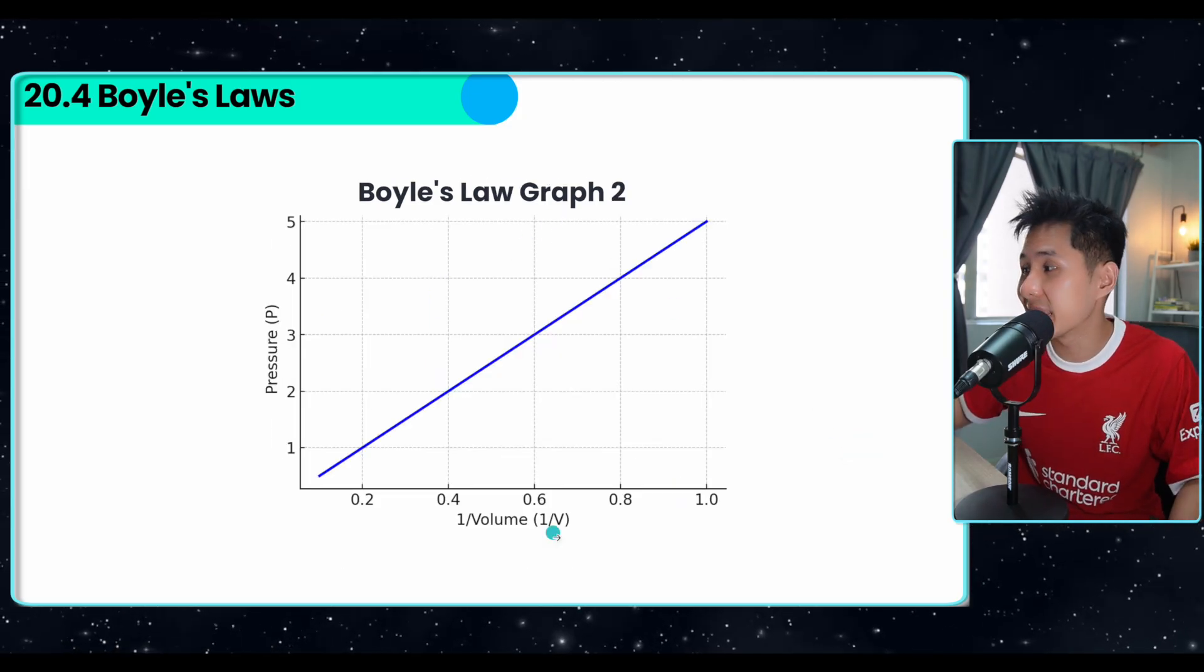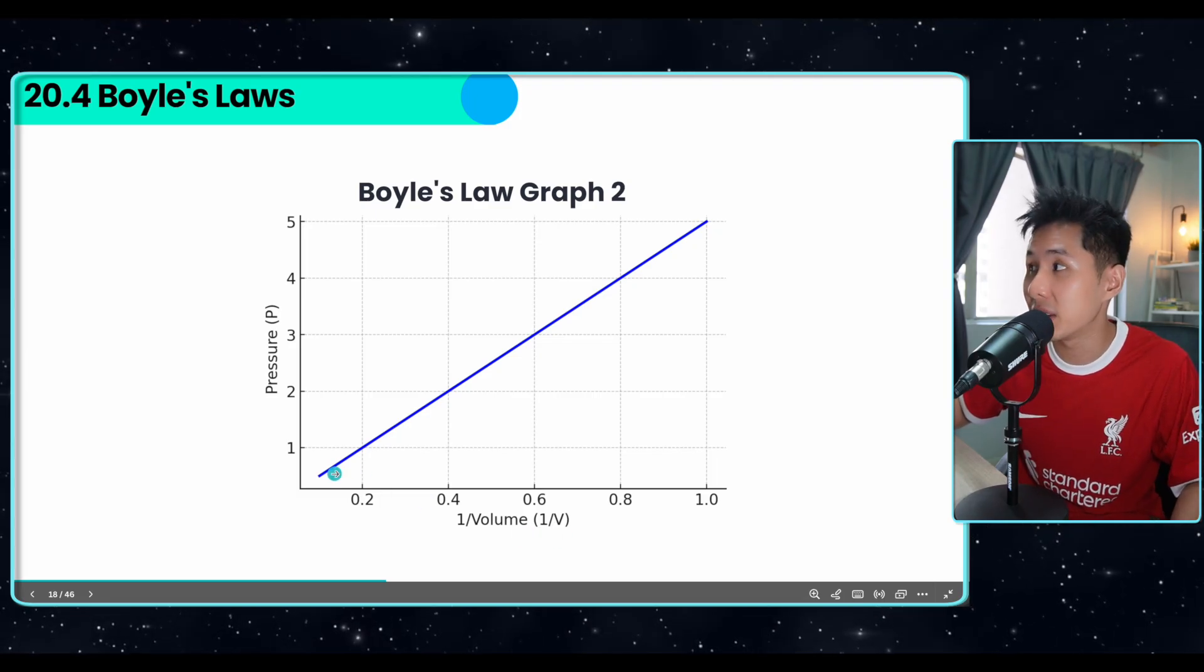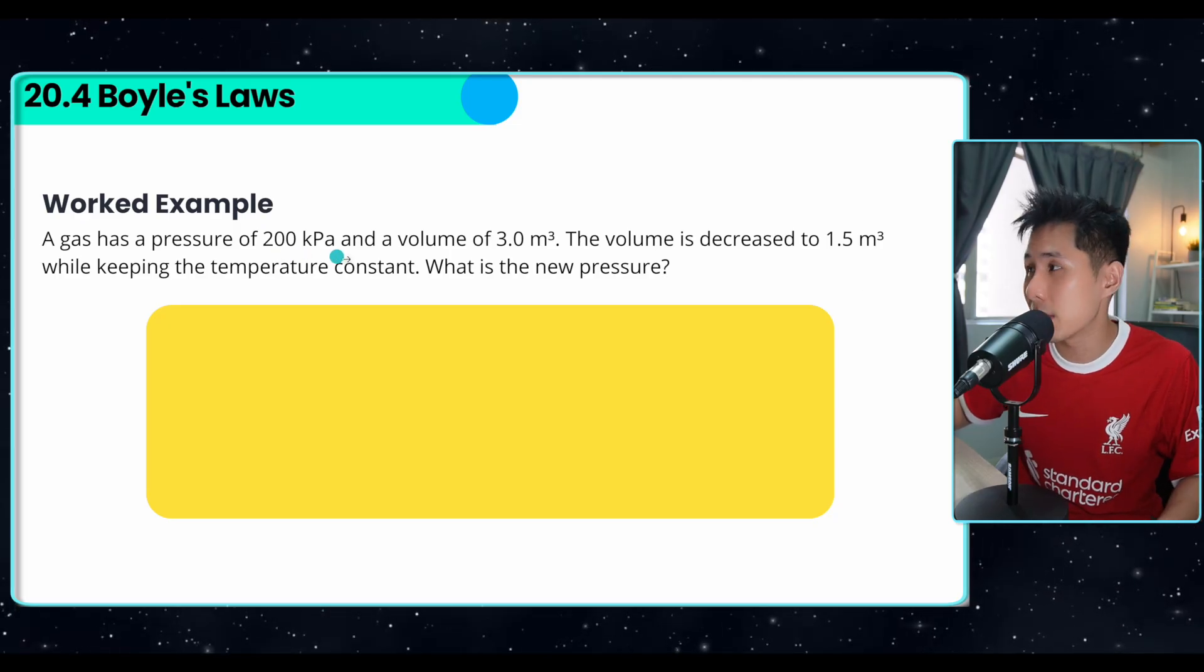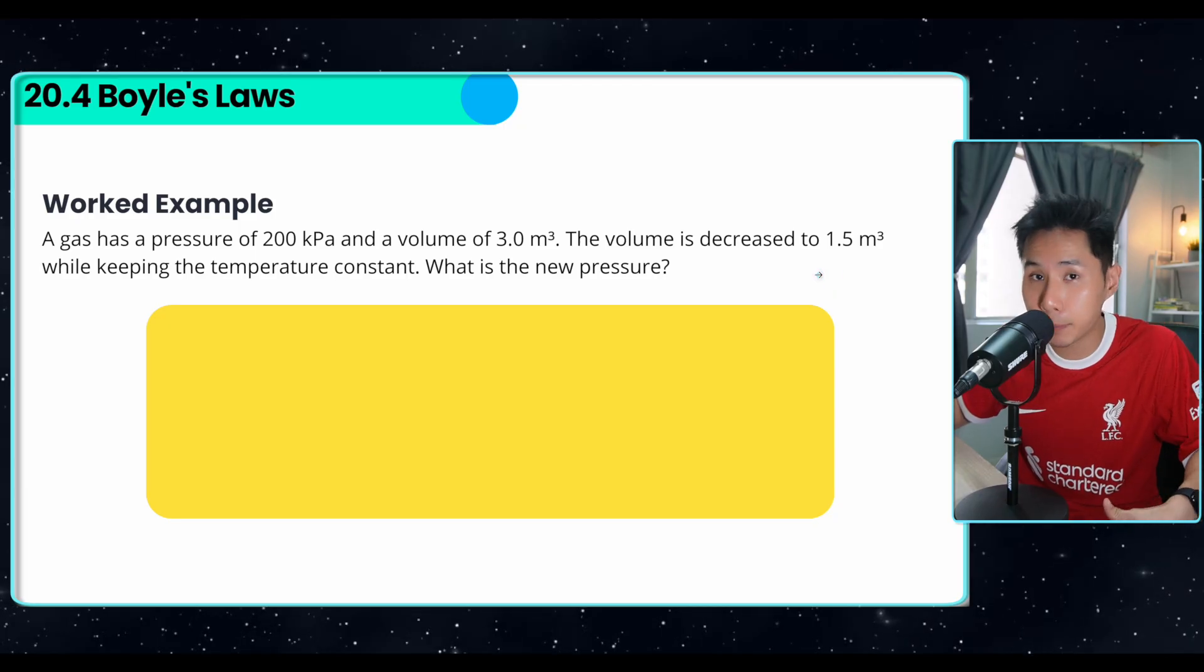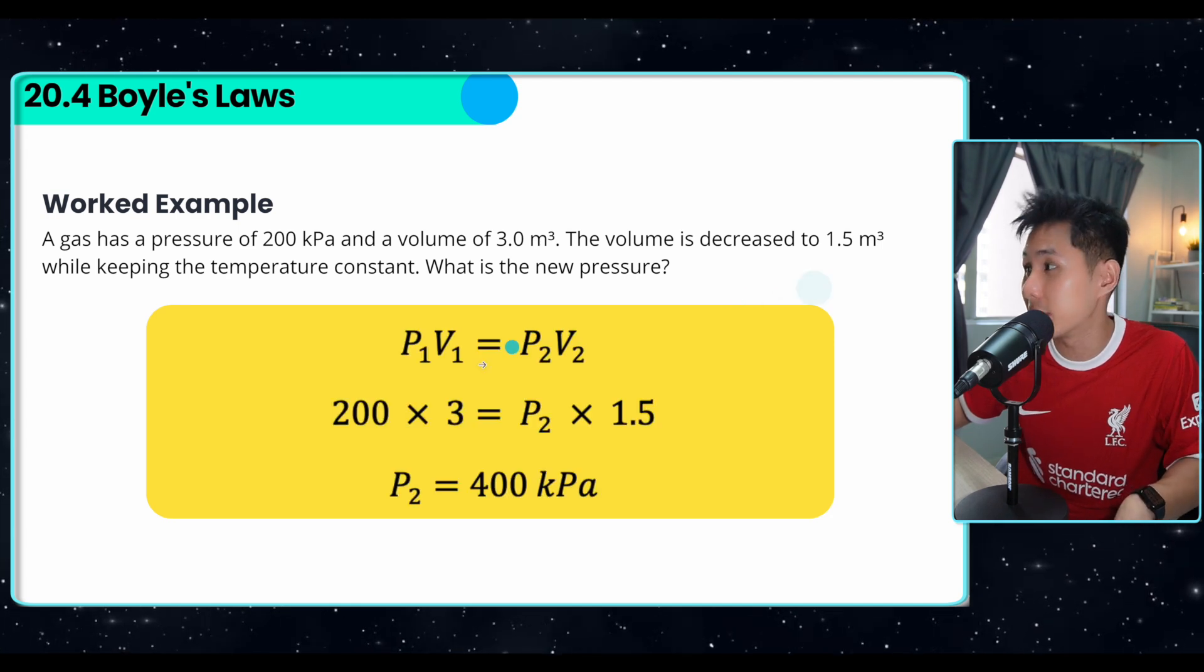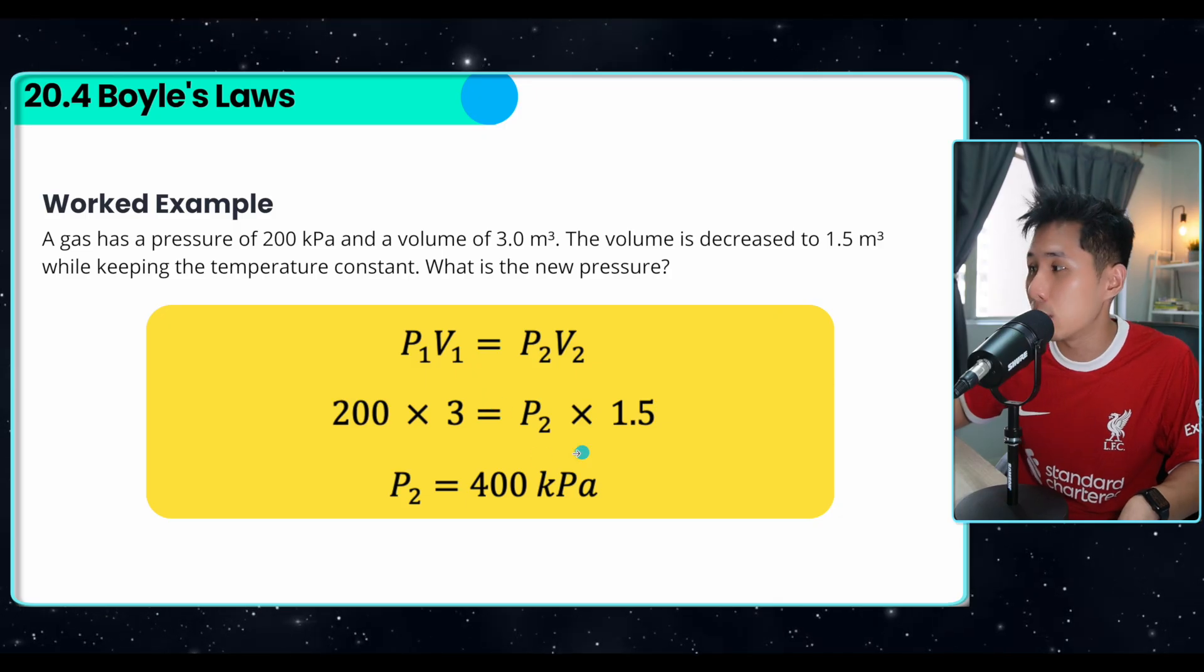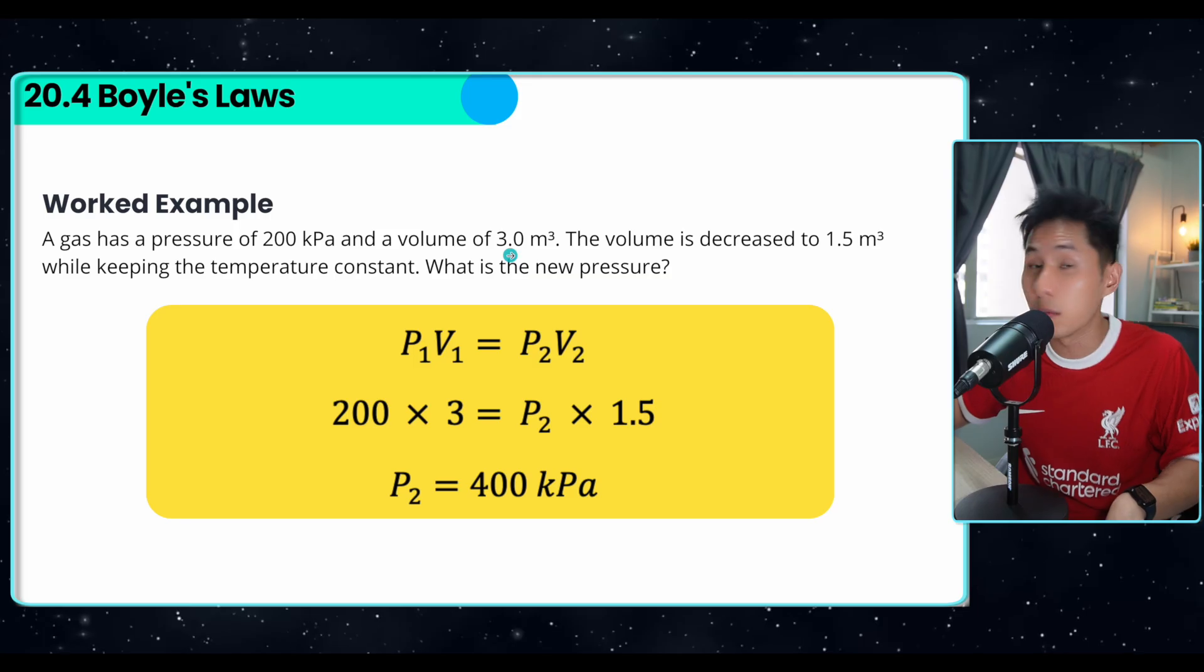And there's another graph for Boyle's Law. Instead of using volume in the x-axis, it's 1 over volume. That's when you have a straight line graph. Now let's solve a work example. So this gas has this amount of pressure and volume. The volume is decreased. Now they have less space. Collision more likely to happen. So higher pressure. But we can calculate the exact amount of pressure using the formula here. Just substitute all the value inside and you have gotten 400 kilopascal. You can see the pressure double when the volume is half.